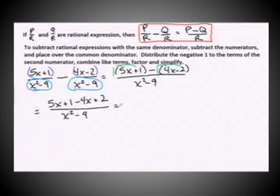The next step in the process is to combine like terms in your numerator. Positive 5x and negative 4x leaves us with positive 1x, and positive 1 and positive 2 give positive 3. And we have the common denominator of x squared minus 9.